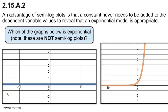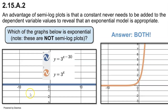Let me demonstrate the advantage of semi-log plots by starting with two graphs that are not semi-log plots. Which one of these two graphs is the graph of an exponential function? Ha-ha, trick question! Both of these graphs are actually graphs of exponential functions. Obviously, the graph on the right is exponential — you can see it shooting up into the sky as it goes to the right. But even though the graph on the left looks linear, it is actually exponential as well.